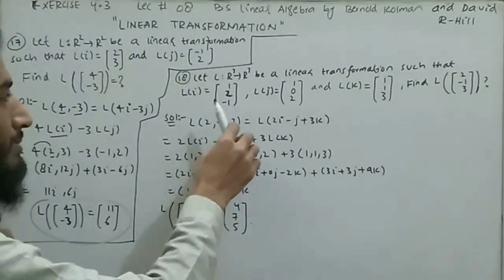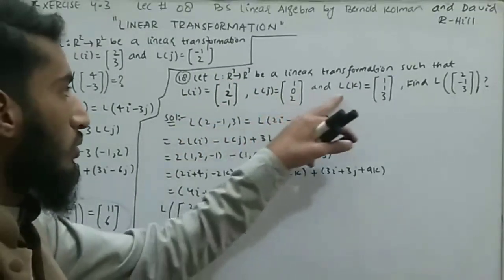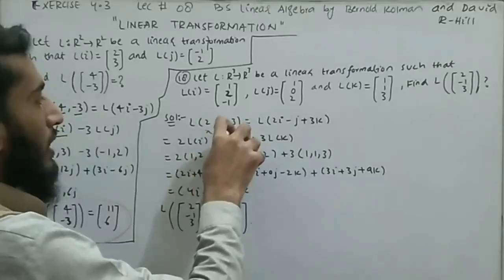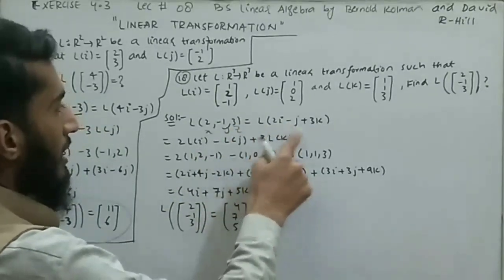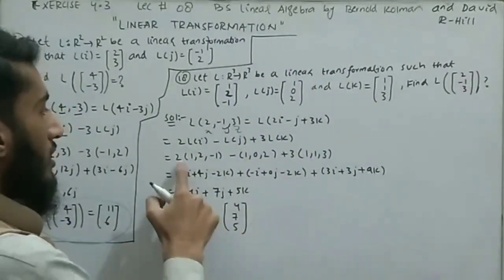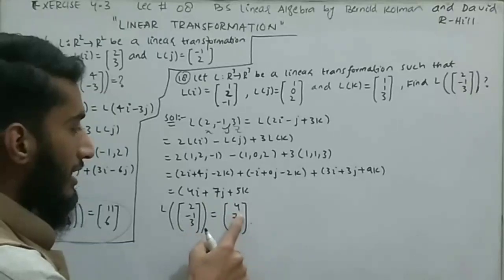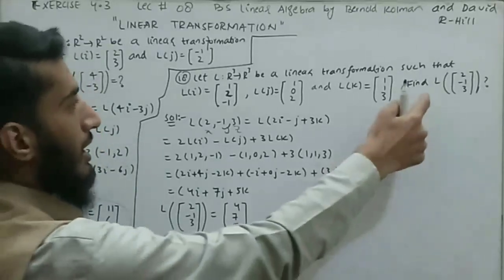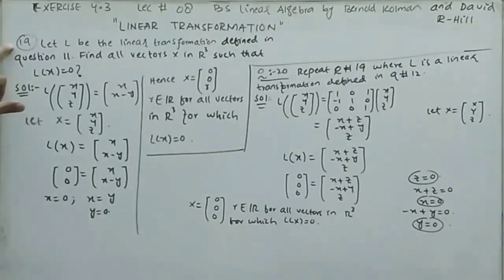Question 18 is similar but involves a 3×3 transformation. Let L be a linear transformation from R³ to R³ such that L(i) = (1,2,-1), L(j) = (1,0,2), L(k) = (1,1,3). Find L(2,-1,3). We write L(2,-1,3) as L(2i - j + 3k), factor out 2, -1, and 3 respectively, then substitute and simplify to get the answer (4, 7, 8).